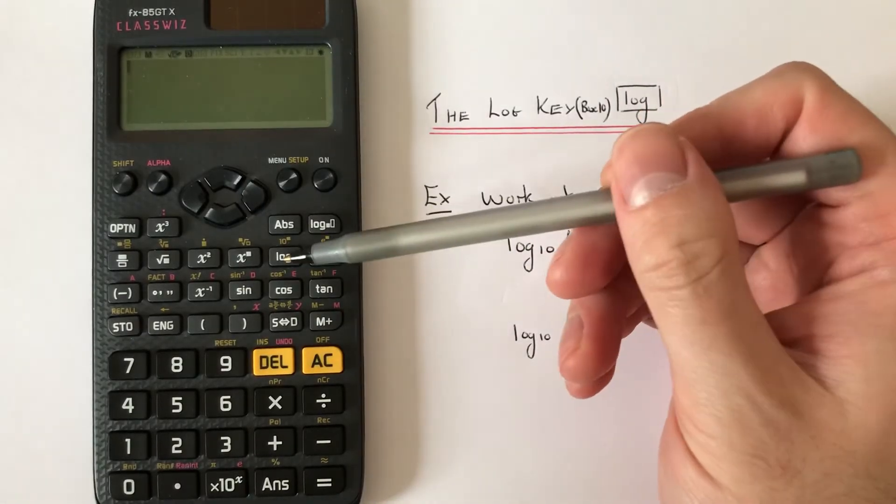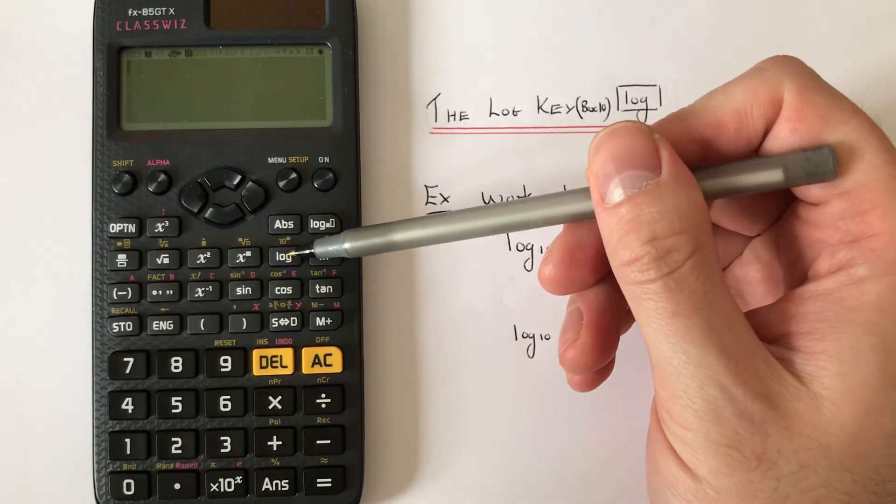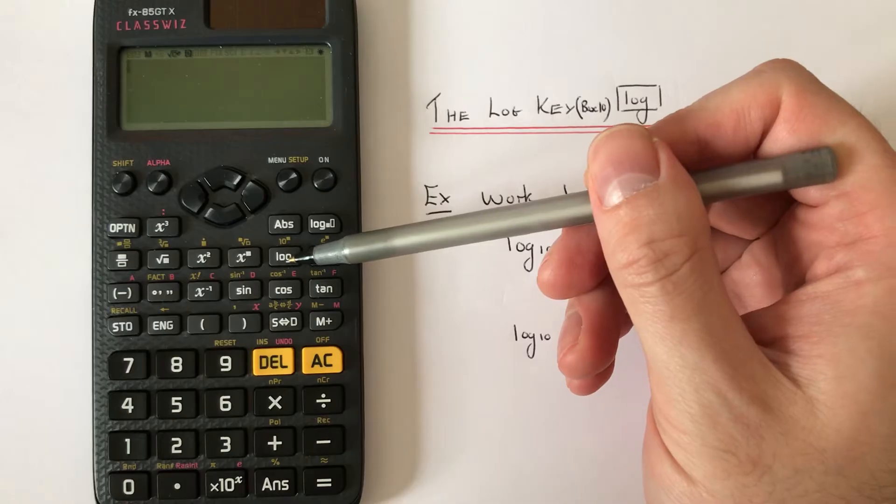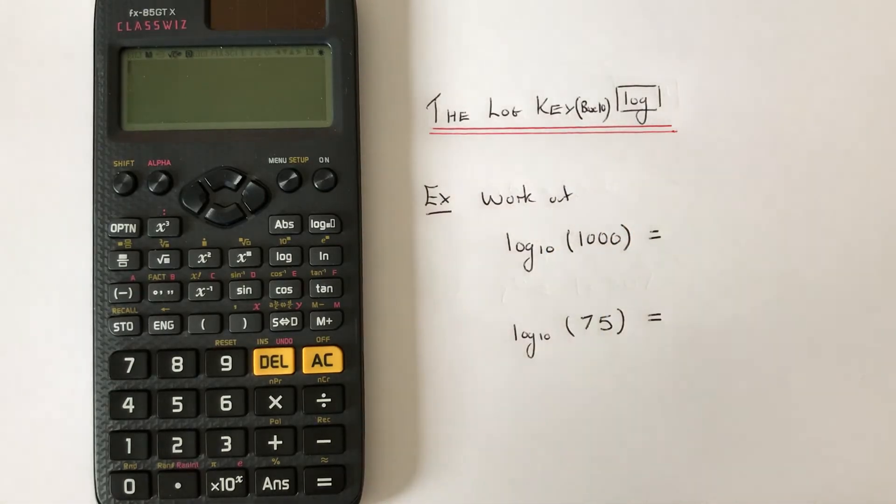The key is located on the second row of the scientific functions, which is here. So let's have a look at the examples.